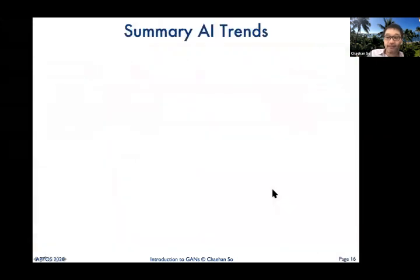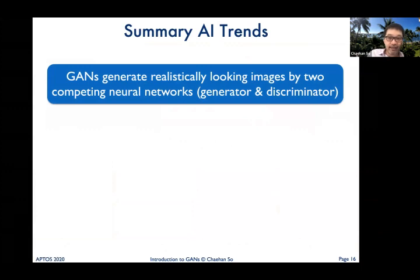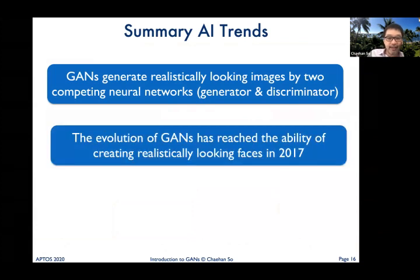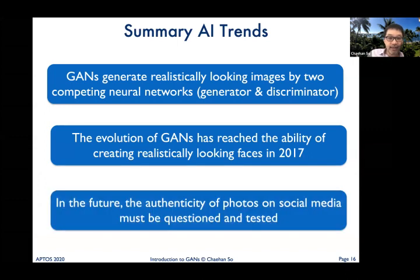In summary: GANs generate realistically looking images through two competing neural networks — the generator and the discriminator. The evolution of GANs reached the ability to create realistically looking faces in 2017, and improved further across more domains after that. Finally, going forward, the authenticity of photos on social media must be questioned and tested — a note of caution I hope you can incorporate in your real life and when teaching your children.